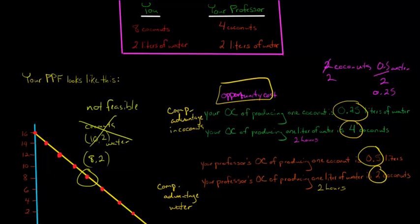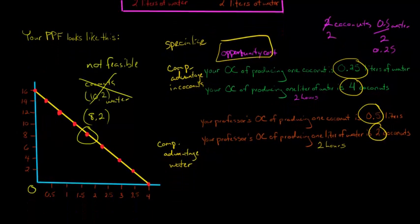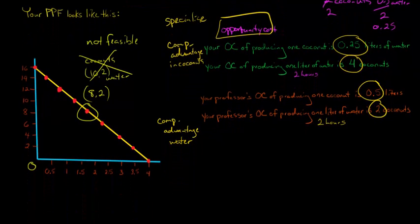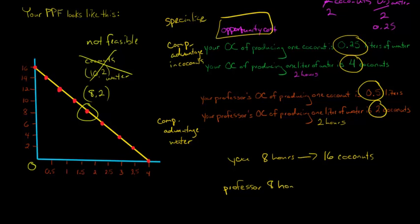Now what we want is for each of you to specialize where you have a comparative advantage, and then you can trade and each be better off. For example, you take your whole eight hours and just do coconuts — you'd end up with 16 coconuts at two per hour. And your professor, if they just collect water for eight hours at half a liter per hour, they'd end up with four liters of water.